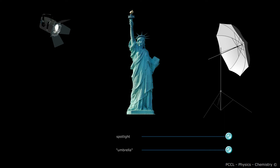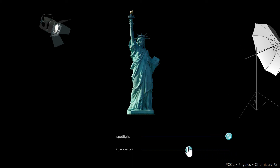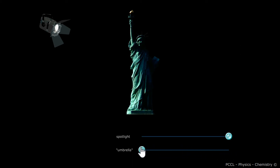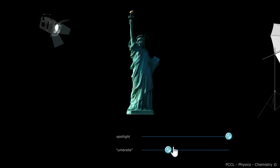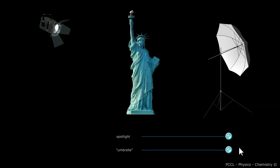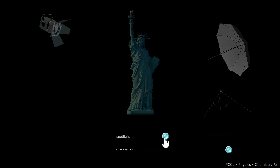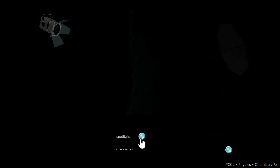Photographic umbrellas make excellent diffusers. It broadcasts absolutely everything it receives, and this sheds light on the other side of the statuette. Without the umbrella, the spotlight light can illuminate. Without the spotlight, the umbrella can do nothing.